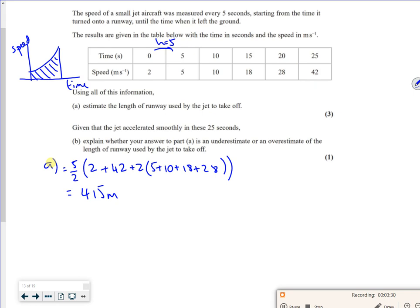Now it says to you, given that the jet is accelerating smoothly in these 25 seconds, explain whether it's an underestimate or an overestimate. So I've kind of alluded to it when you draw it there. But if you look at the jumps, that's a plus three, that's a plus five, that's a plus 18, that's a plus eight, that's a plus 10. You can see that the jump is getting bigger.